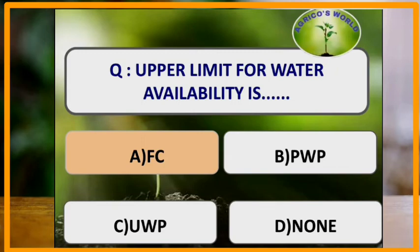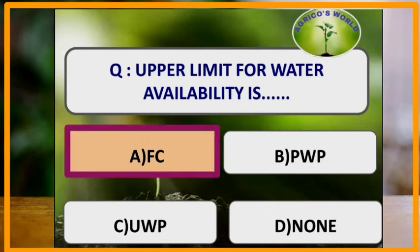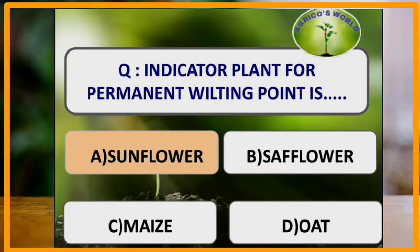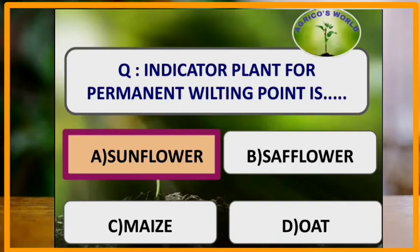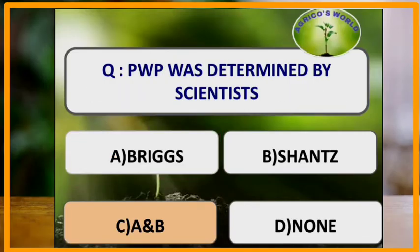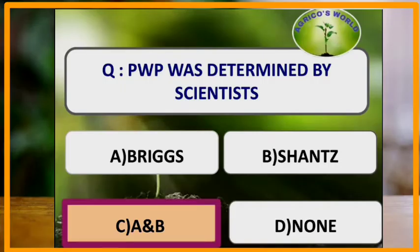The upper limit of water availability is called field capacity. At field capacity, the macro pores are filled with air and the micro pores are filled with water. The indicator plant for permanent wilting point is sunflower, and sunflower is also used as an indicator plant for boron deficiency.